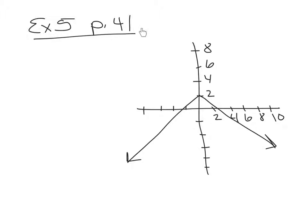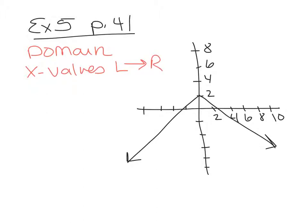Example 5 has a graph on page 41. We're going to talk about the domain and range. The domain is the x values, and we look at that left to right. This graph goes way out to the left — it keeps going left, left, left. This is not the most left point; it goes left out into negative infinity. How far right does it go? It also goes right out into positive infinity. So the domain is negative infinity to positive infinity — what we call all real numbers.